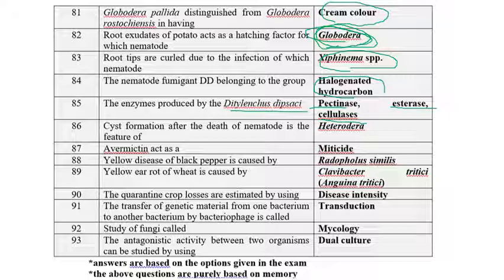Cyst formation after the death of the nematode is the characteristic feature of Heterodera, not Globodera. Avermectin acts as a miticide. Yellow disease of black pepper is caused by Radopholus similis.